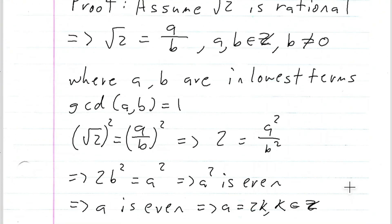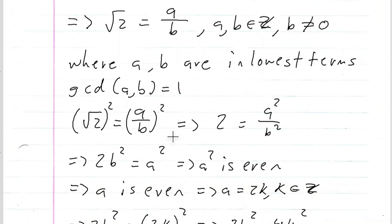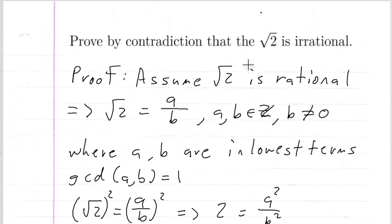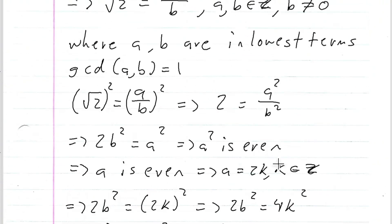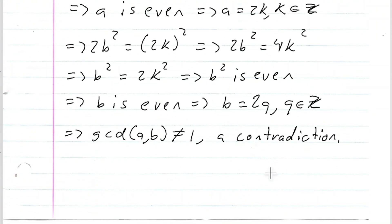Assuming that the square root of two is rational — with the two integers in lowest terms, meaning the GCD of those integers is one — led to a contradiction. So assuming that the square root of two is rational led to a contradiction, which means the square root of two must be irrational. And that is our proof.